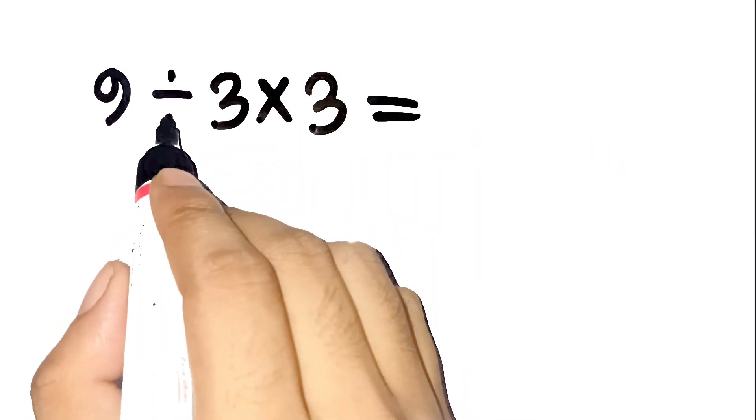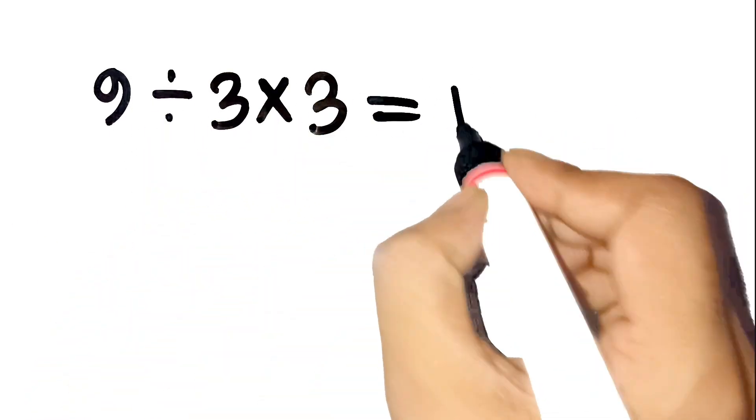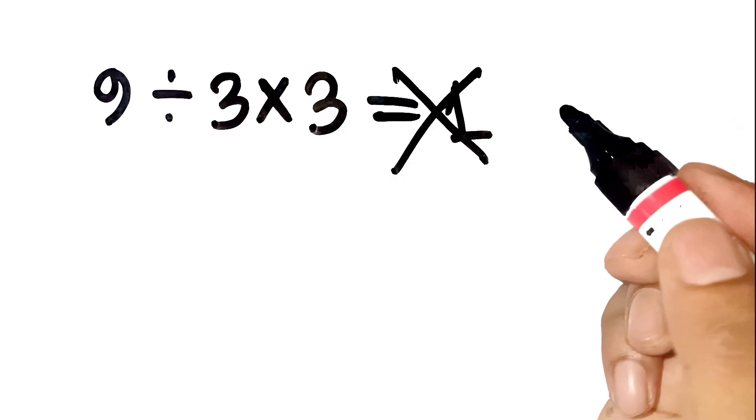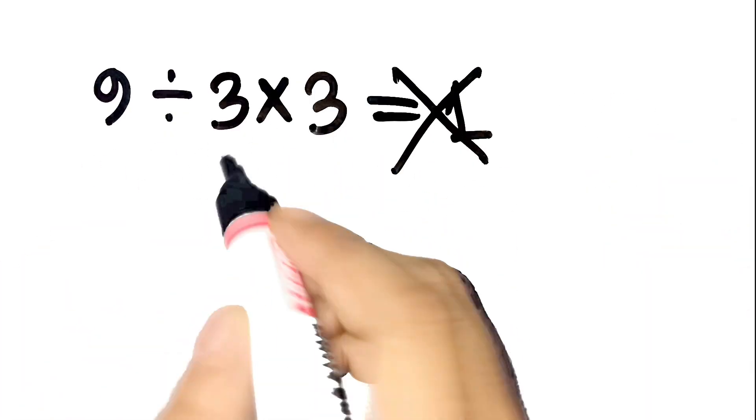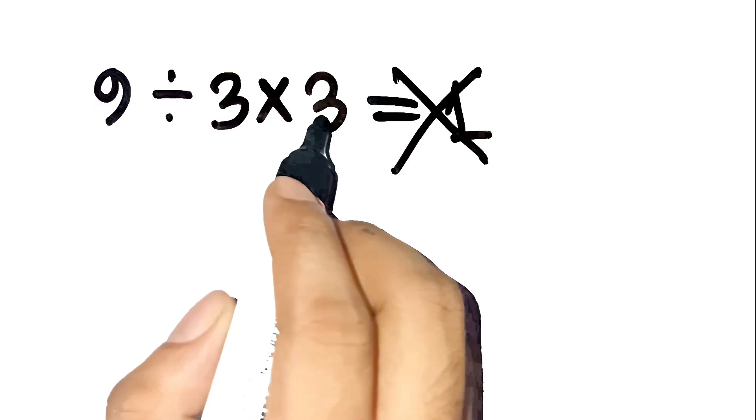If you think the answer to 9 divided by 3 times 3 is 1, you are absolutely wrong. I know why you might think that, because you're probably doing this in your head like most people do.